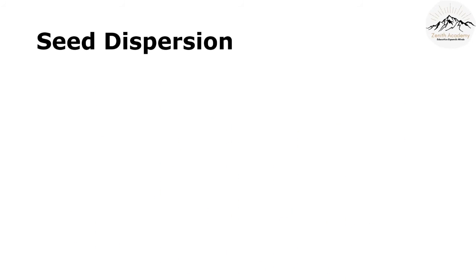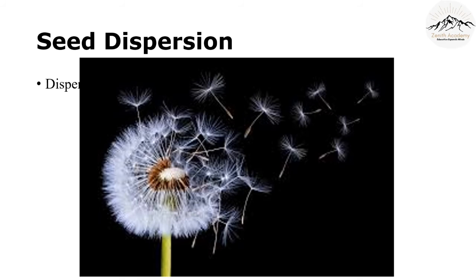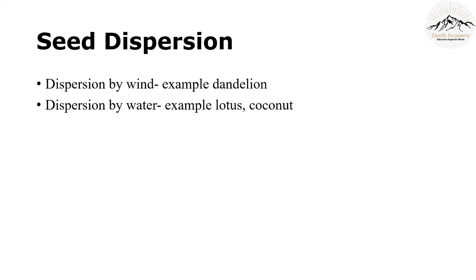Let's see how seeds can disperse. The first method is dispersal by wind. Seeds of some plants are lightweight and can be carried away with wind. Have you seen dandelion? Dandelion is so light that it can be carried away with wind. The second method is dispersal by water. Some plants have spongy seeds or seeds with a fibrous outer covering, which helps these seeds stay afloat in water.